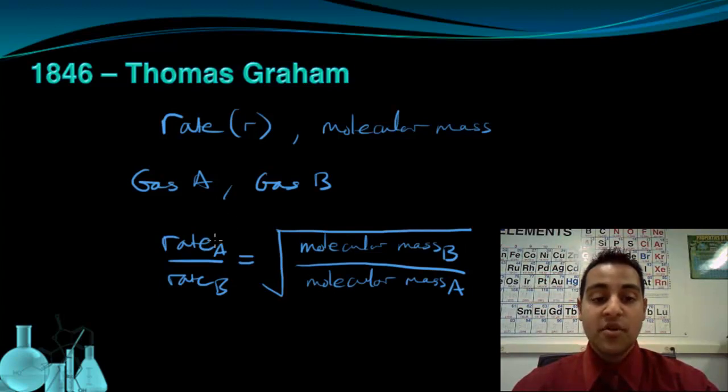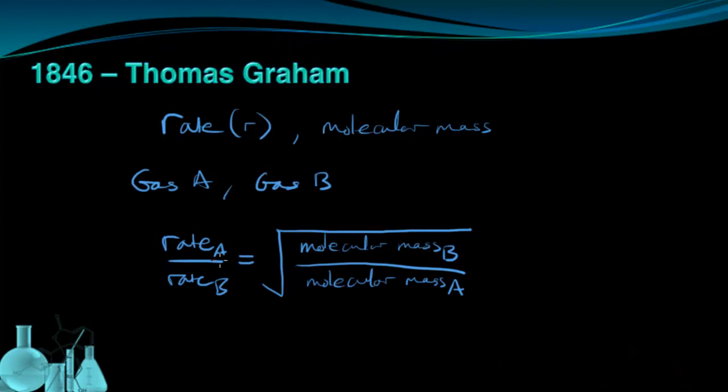So the ratio of the rates is the square root of the inverse ratio of the masses. So rate A over rate B is equal to the square root of mass B over mass A. We call this Graham's Law.